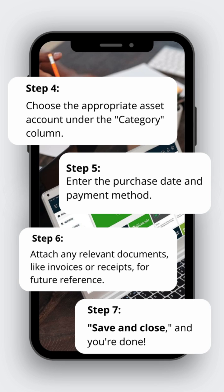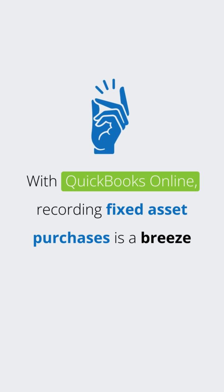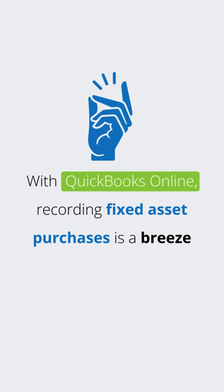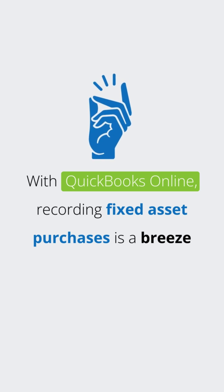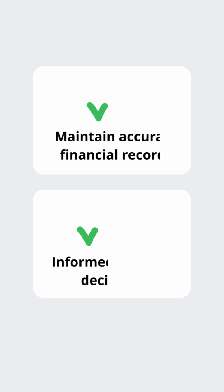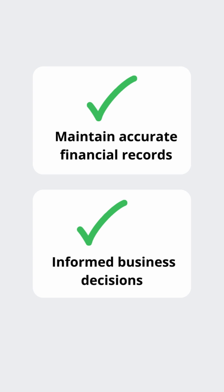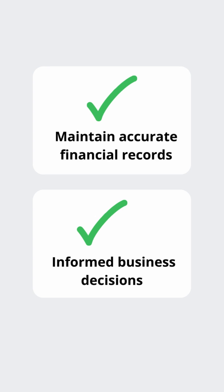Step 7: Hit save and close and you're done. With QuickBooks Online, recording fixed asset purchases is a breeze, allowing you to maintain accurate financial records and make informed business decisions.